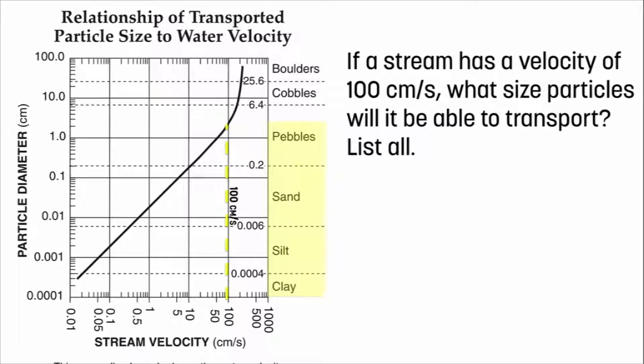So if the stream is moving at 100 centimeters per second, it's carrying pebbles, sand, silt, and clay. The reason why is because that 100 centimeter cutoff happens somewhere in the middle of pebbles. So boulders and cobbles would not be carried at that speed.